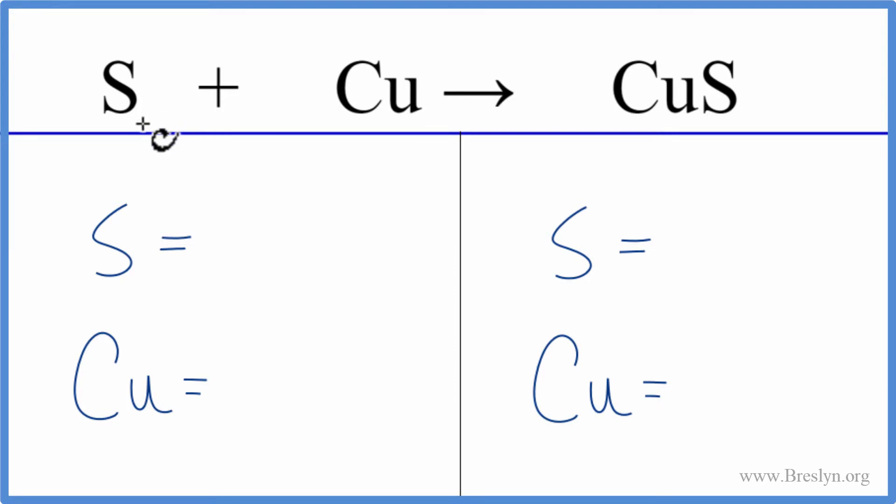We have one sulfur. It's not written one, but there's a one there we assume it to be there. We have one copper, one copper here, and then one sulfur here. These two atoms are joined in a chemical bond.